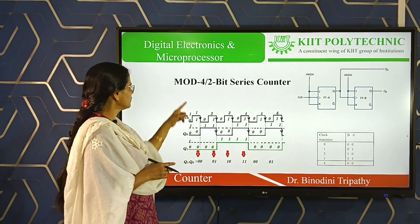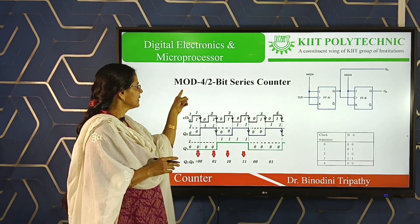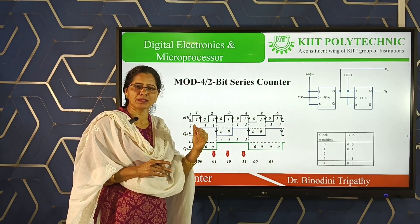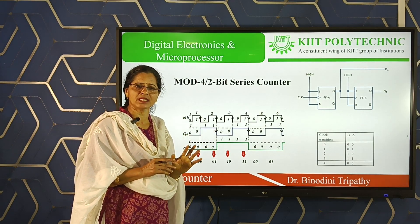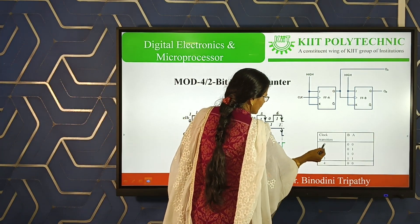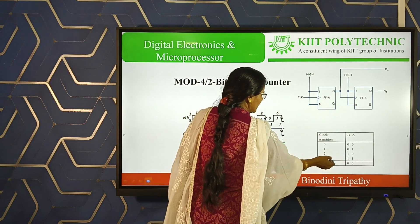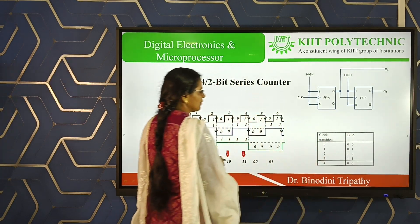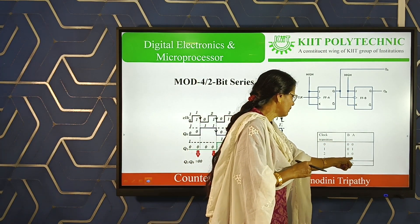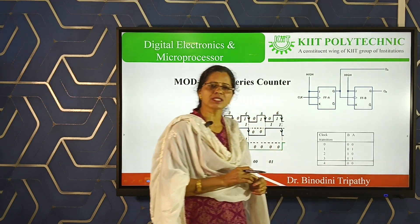Let us take a simple design: mod-4 or a 2-bit counter. Mod-4 means the total number of counting sequences is 4. Total number of sequences 4 means it starts counting from 0 and the last count is 3 — it can count from 0 to 3. In binary form, it counts from 00 to 11. When the count reaches 11, it will repeat the same count again.